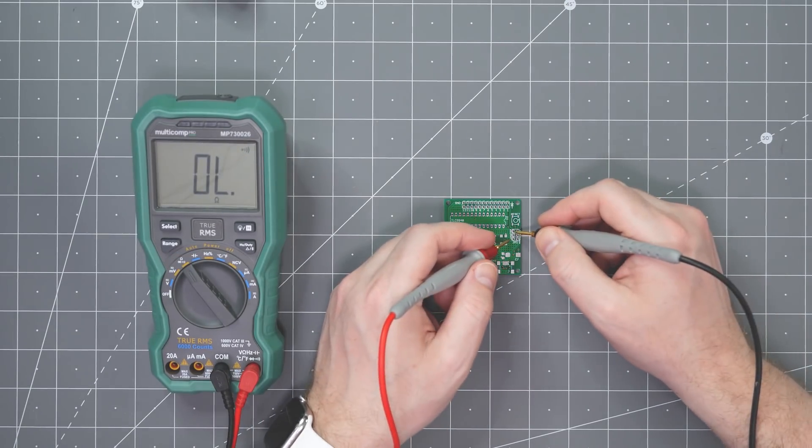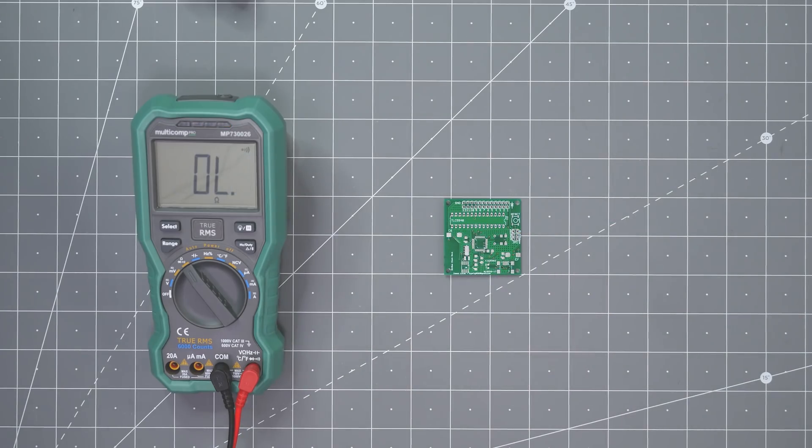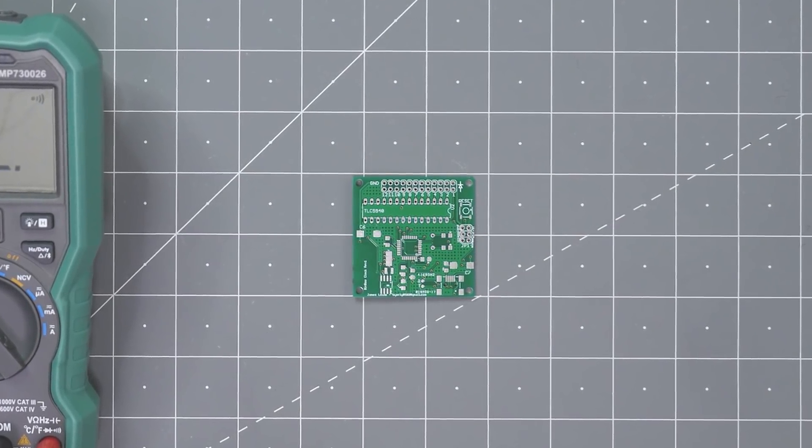Whenever the meter detects a short, it beeps, which in this case is bad because I am measuring the VCC or 5 volt pin and ground. So this PCB has a direct short. We need to figure out why that board measures a short.